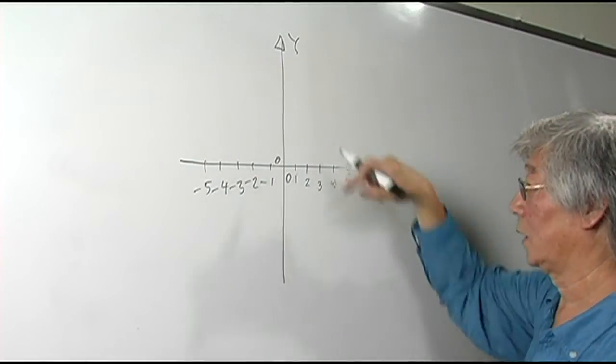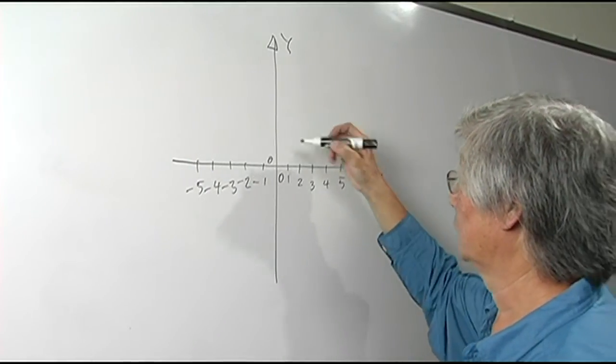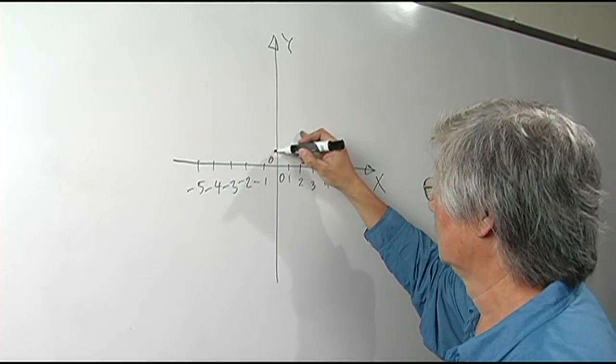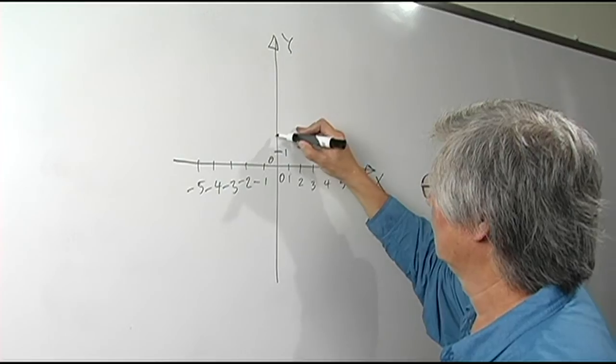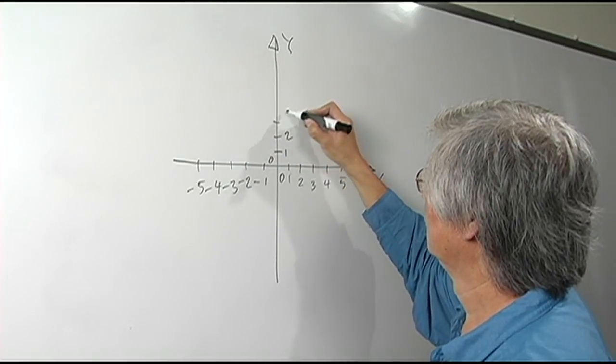Similarly, on the Y axis we have values going up: one, two, three, four, five.